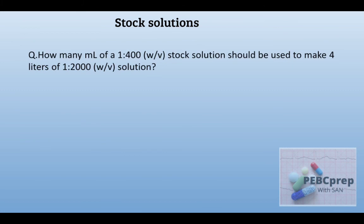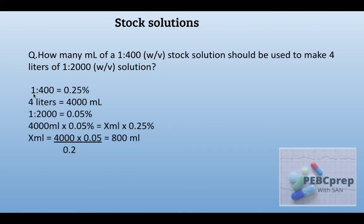Next question: how many milliliters of a 1:400 w/v stock solution should be used to make 4 liters of a 1:2000 w/v solution? Similarly as in the previous question, we convert to percentage strength. 1:400 equals 0.25%, 1:2000 equals 0.05%, and 4 liters is 4000 ml. Put all the values in the formula and we get 800 milliliters.